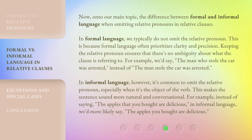In informal language, however, it's common to omit the relative pronoun, especially when it's the object of the verb. This makes the sentence sound more natural and conversational. For example, instead of saying 'the apples that you bought are delicious,' in informal language we'd more likely say 'the apples you bought are delicious.'